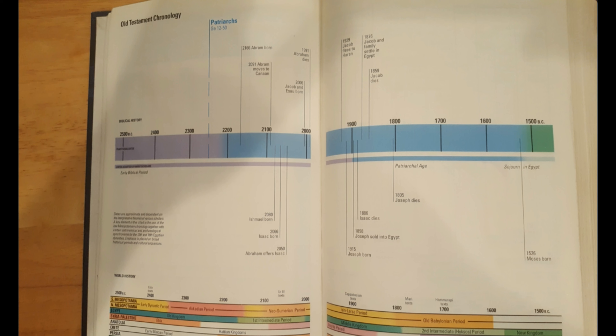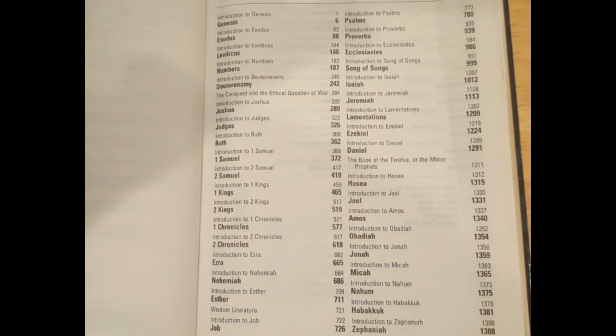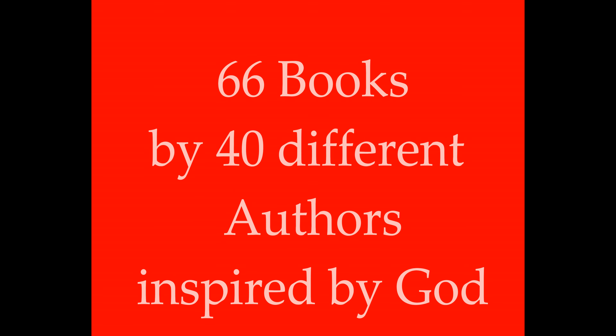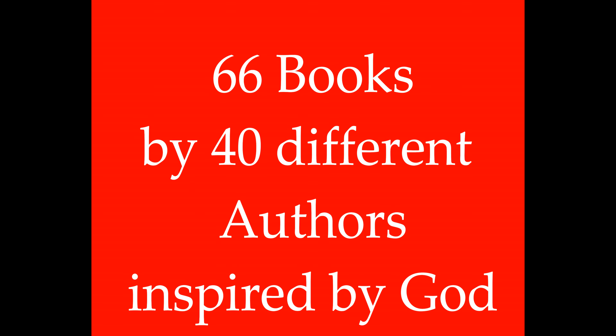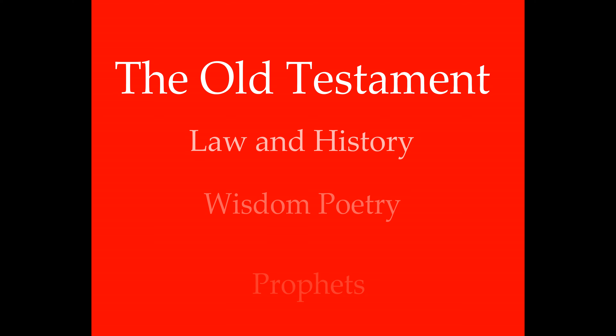Many Bibles have a helps section that talks about the translation that you're going to be reading. It might also tell you about abbreviations you will find. This one actually has a timeline for the Old Testament, and you may find some other helps there before you ever get to the actual books. Perhaps the most helpful part of your Bible before you get to Scripture is a table of contents — it shows you all of the books in the order they come and the page upon which each book starts.